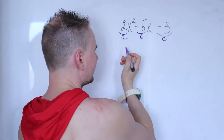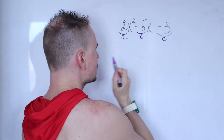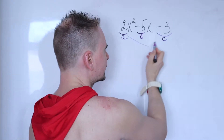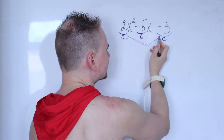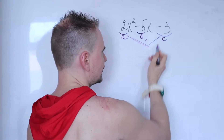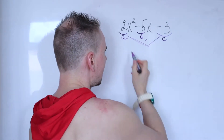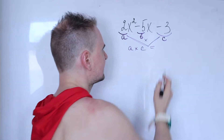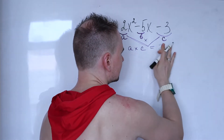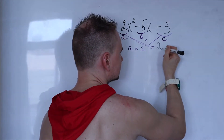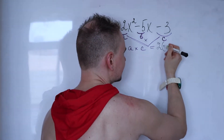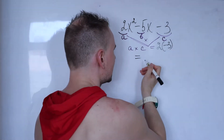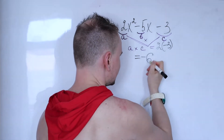Your first thing to do is always multiply your first coefficient, a, by your last coefficient, c. So in this case it's 2 times negative 3, which gives you negative 6.